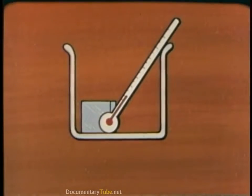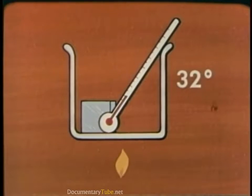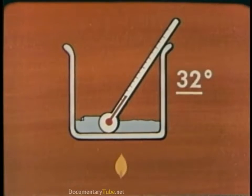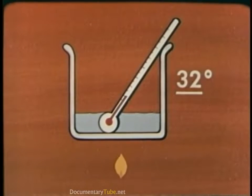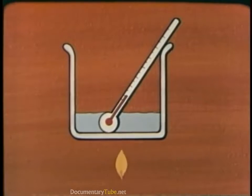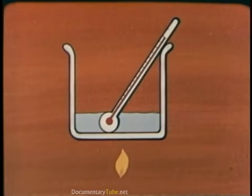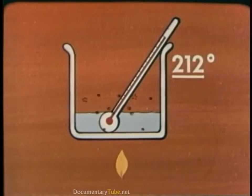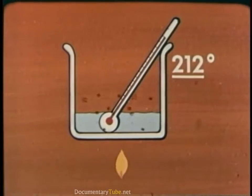Now let's see what happens to temperature if you apply heat to the ice. The thermometer reads 32 degrees Fahrenheit. As the ice changes to water, the temperature stays constant at 32 degrees. The heat is causing the change of state from solid to liquid. Then, as you continue to heat the water, the temperature increases until it reaches 212 degrees. The water starts to boil. The temperature remains at 212 degrees.